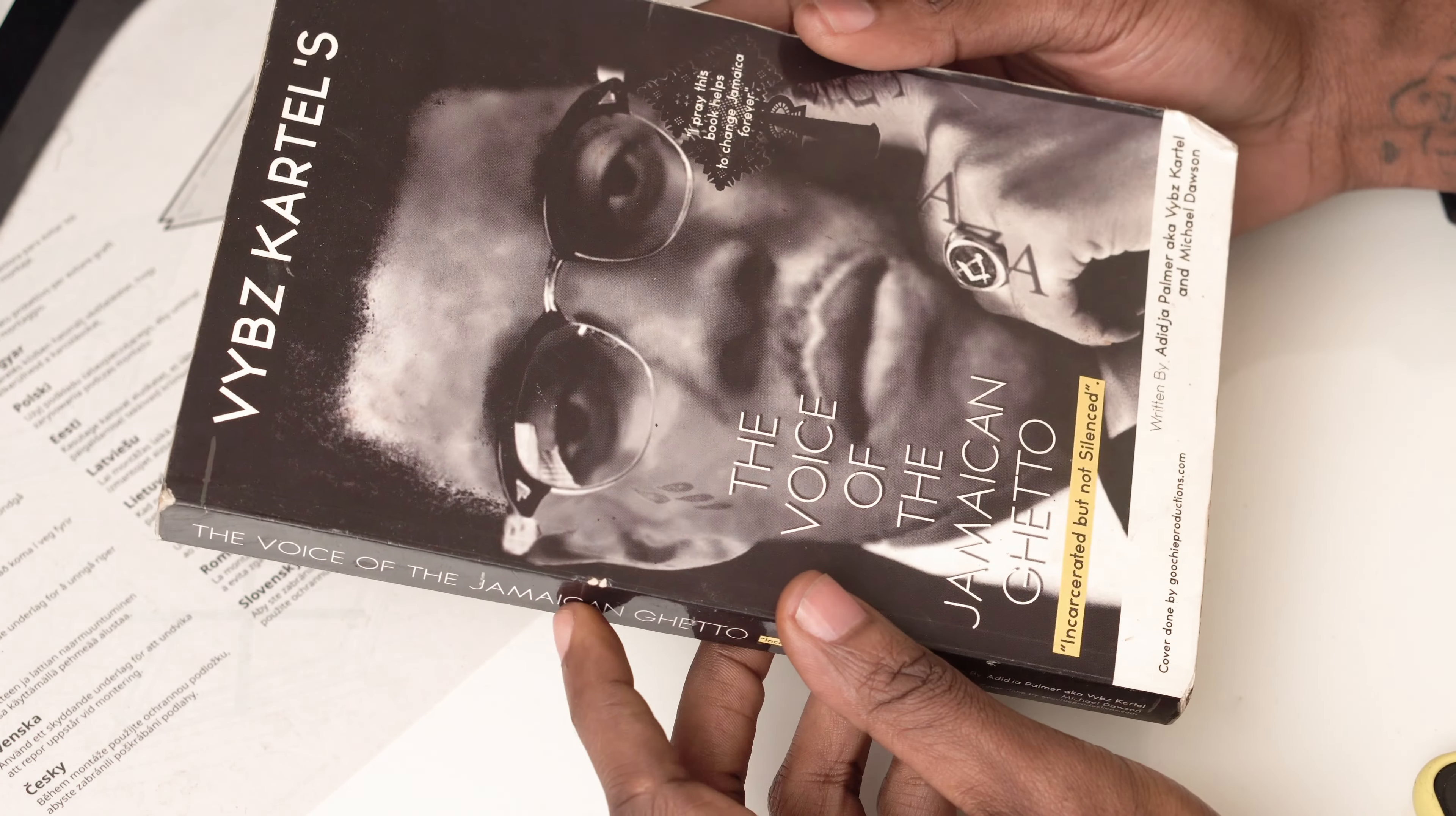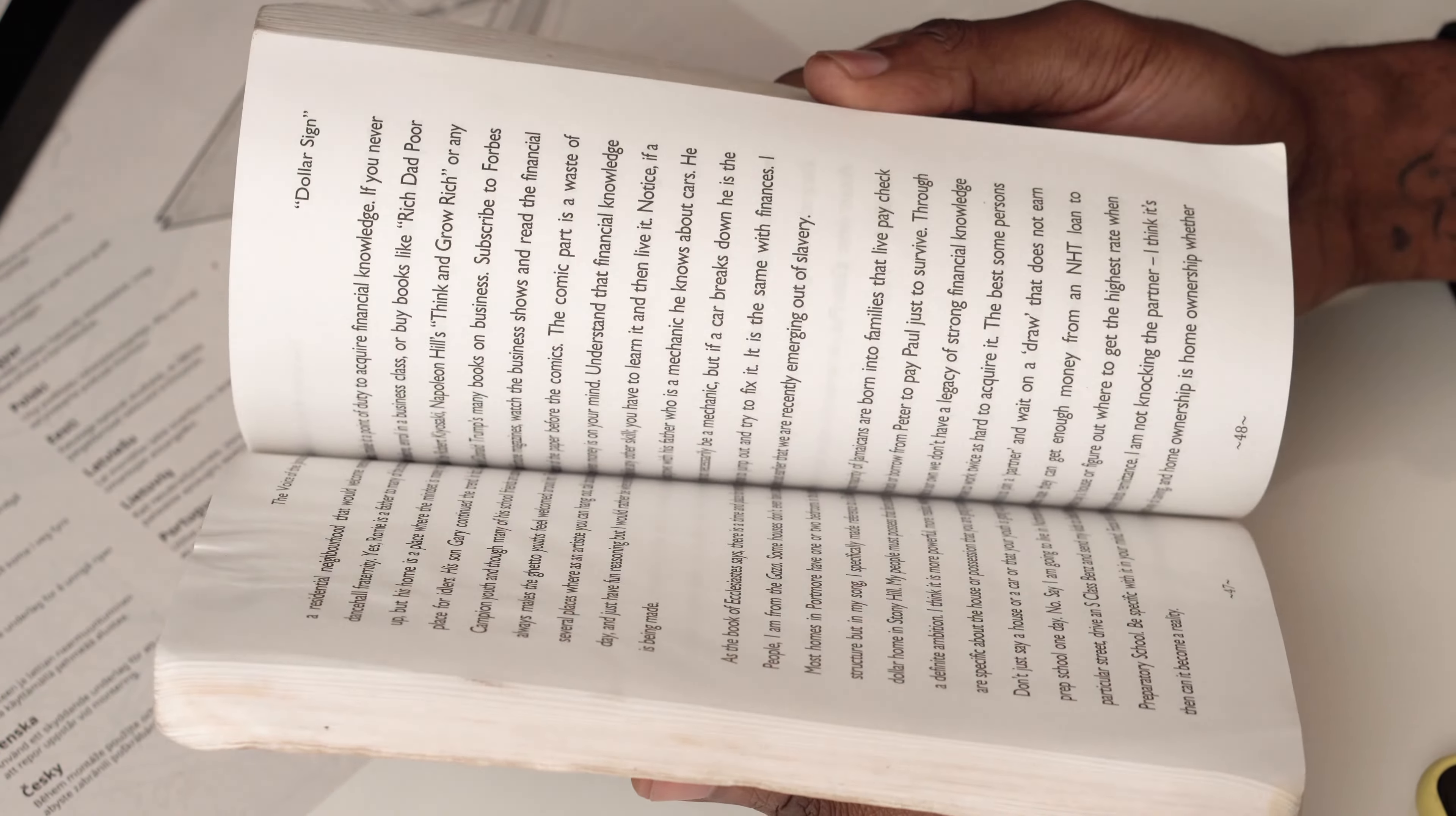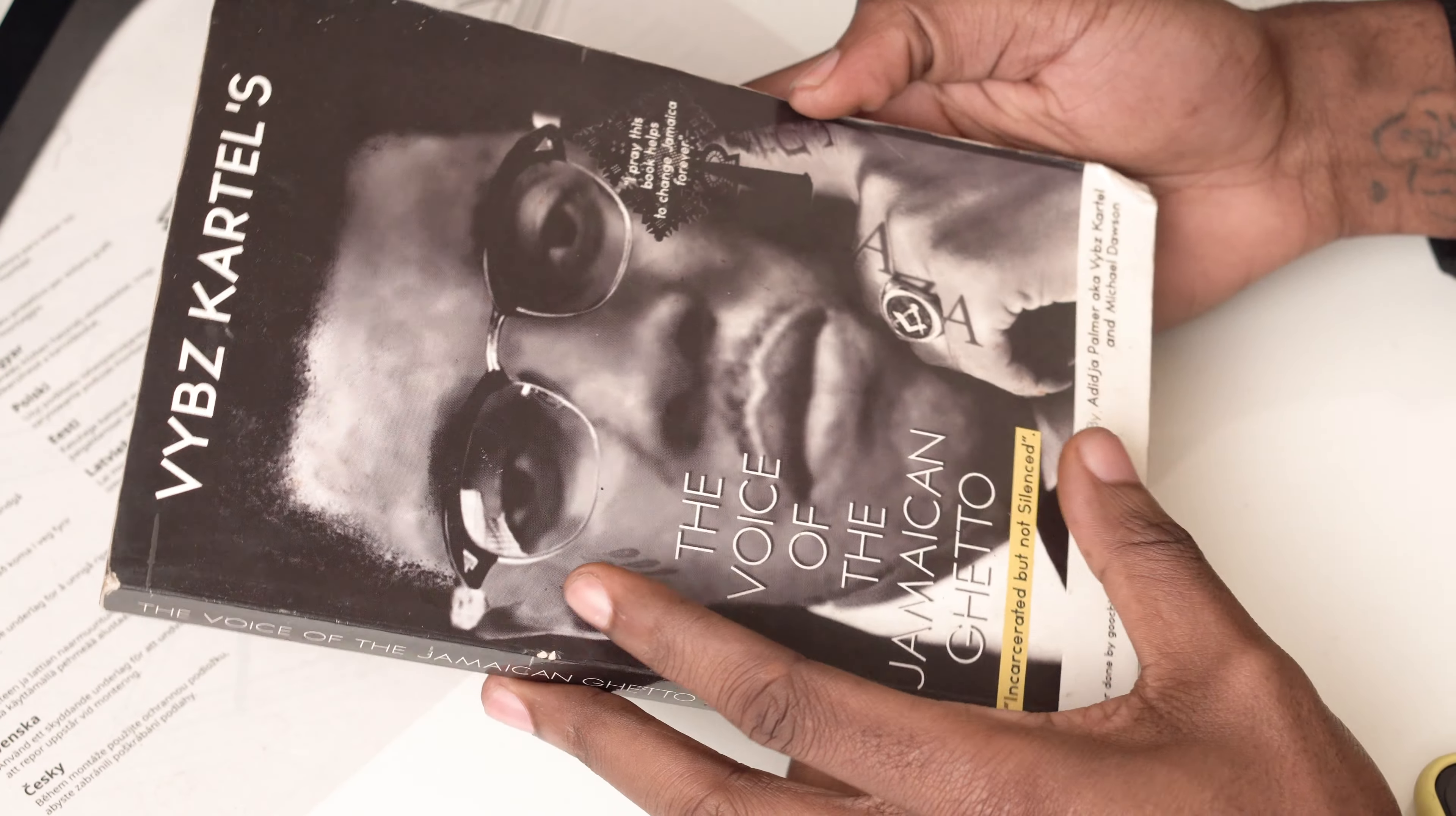The title of this book is Vybz Kartel's The Voice of the Jamaican Ghetto: Incarcerated But Not Silent. This book was written by Vybz Kartel, otherwise known as Adidja Palmer, in collaboration with Michael Dawson.